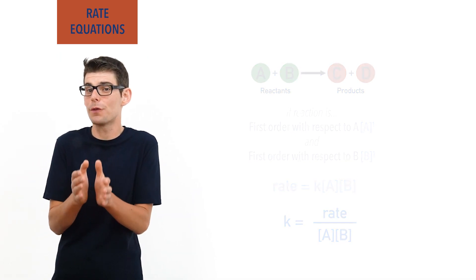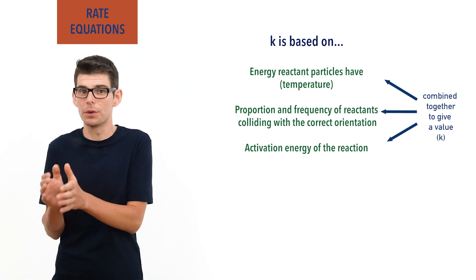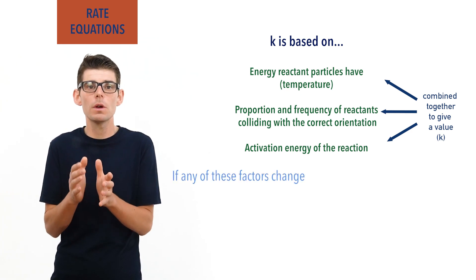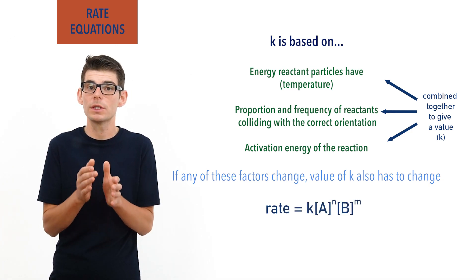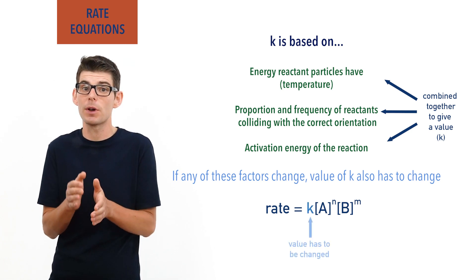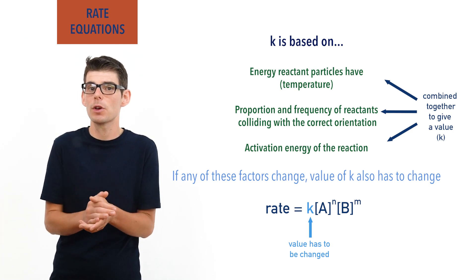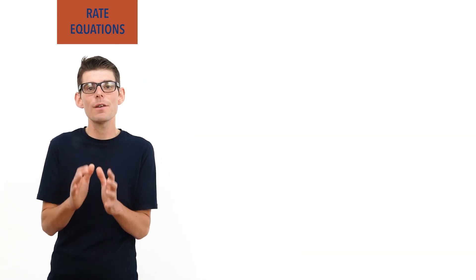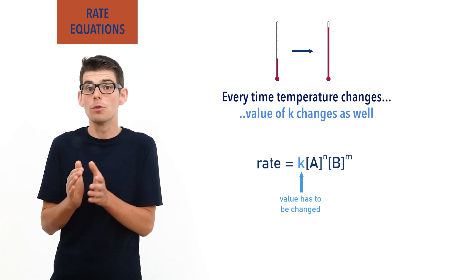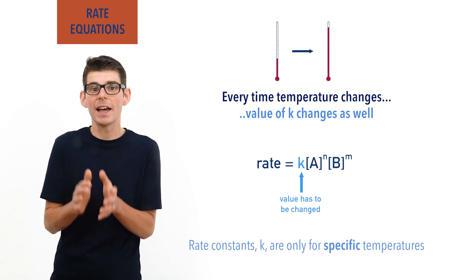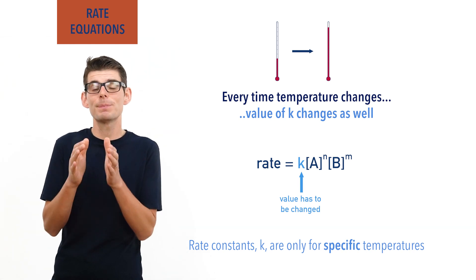However, as the value for K for a reaction is based on the temperature, frequency and proportion of collisions between particles, and the activation energy for the reaction, any changes to these mean the value of the rate constant K would also change. If this happens, the rate equation for a reaction can no longer be used to calculate a rate if the value for K isn't changed in the expression as well. What we're trying to say here is that every time temperature changes, the value of K in the expression also has to change. As a result, rate constants K are only for specific temperatures, and therefore rate equations can only be used to show how changes in concentration directly affect the rate of a reaction at specific temperatures.